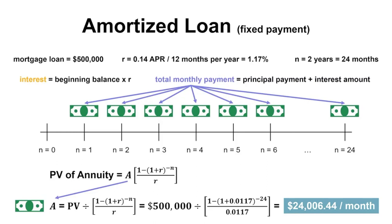Note that in reality, loans and mortgages will rarely be paid off so quickly. However, for the purposes of this example, we will work with a 24-month mortgage so that we can see what happens to the loan over the entire life of the loan. Although our 24-month mortgage isn't quite realistic, the mechanics will still work the same as mortgages in real life.